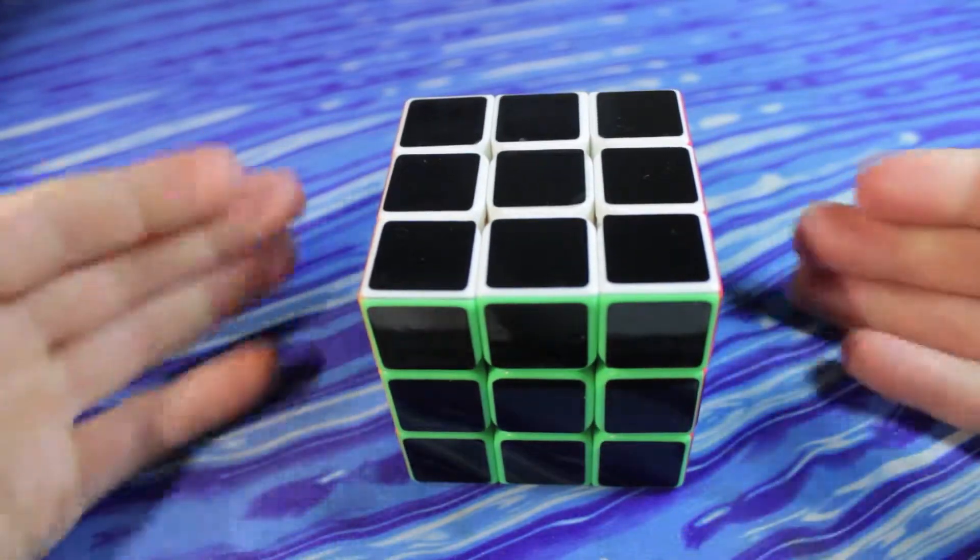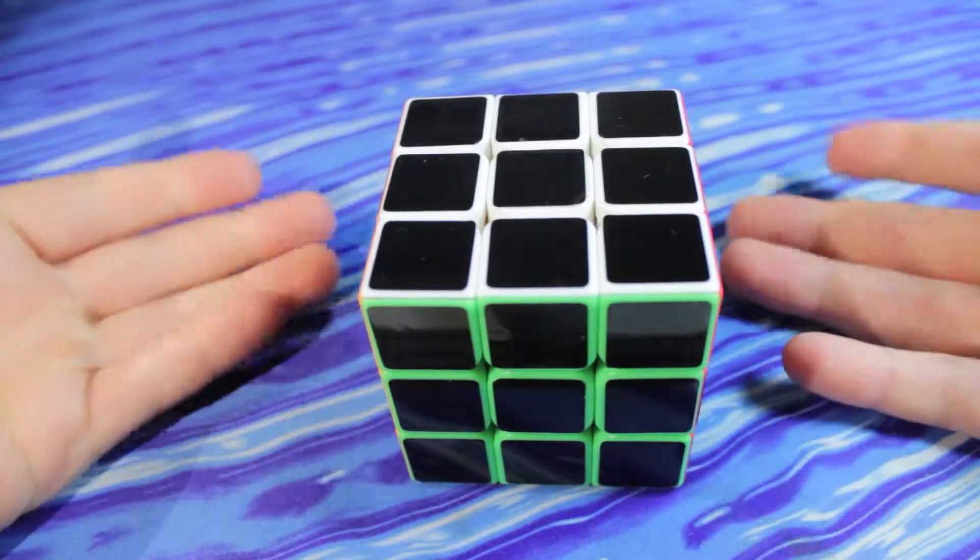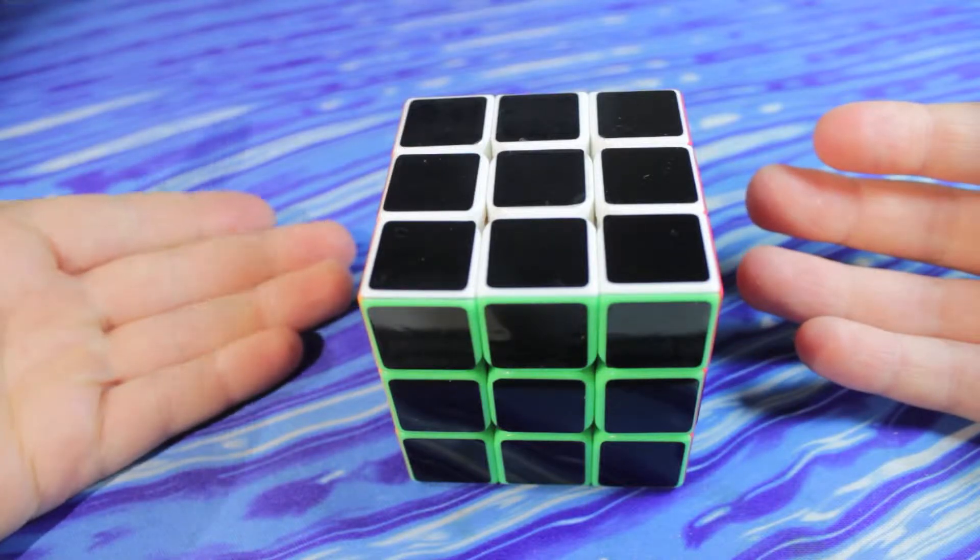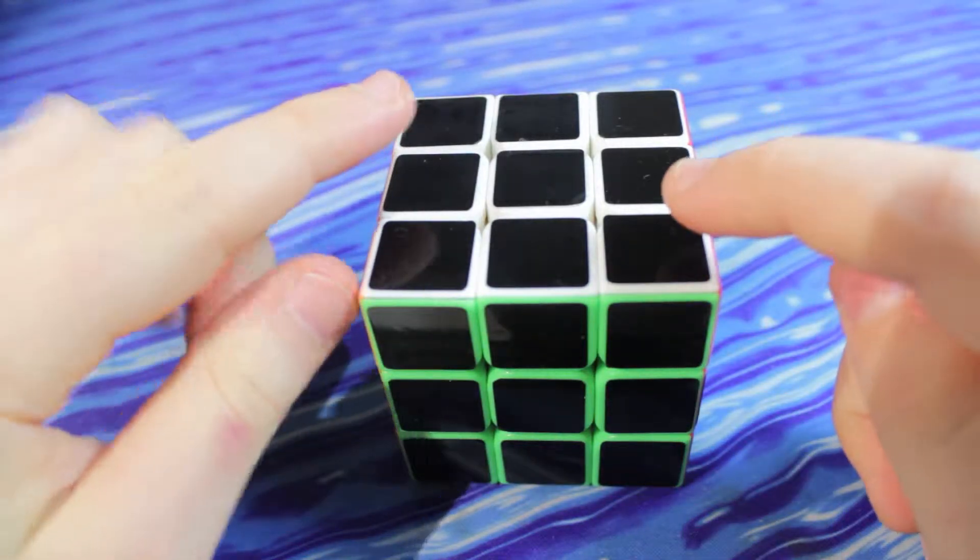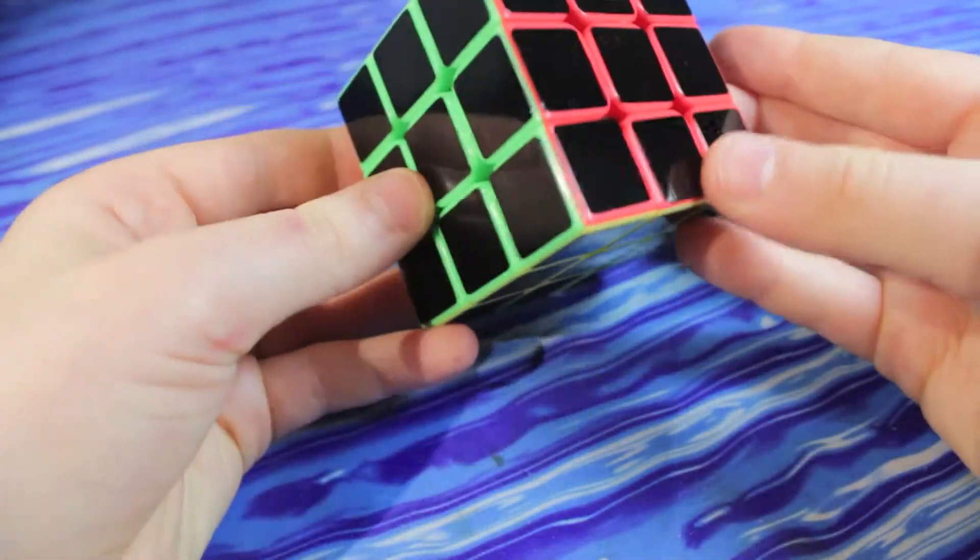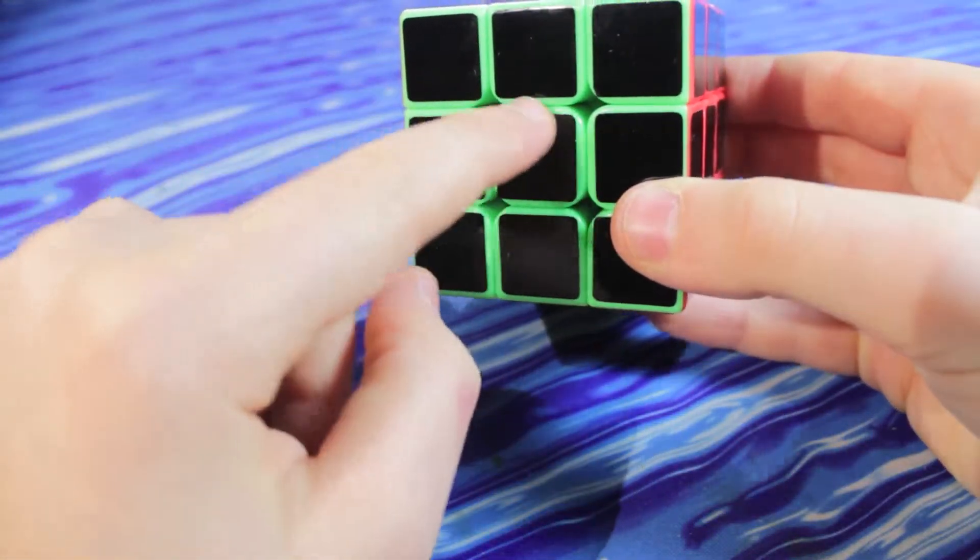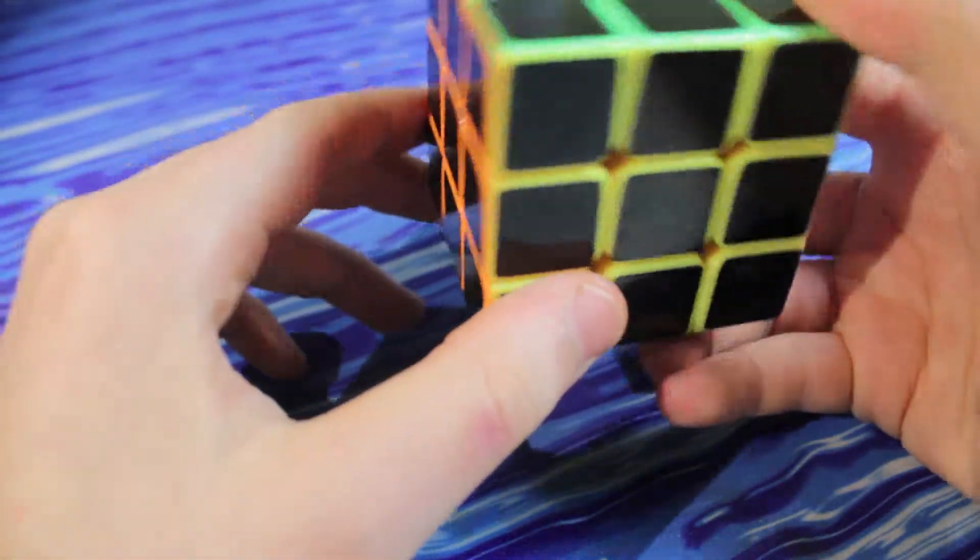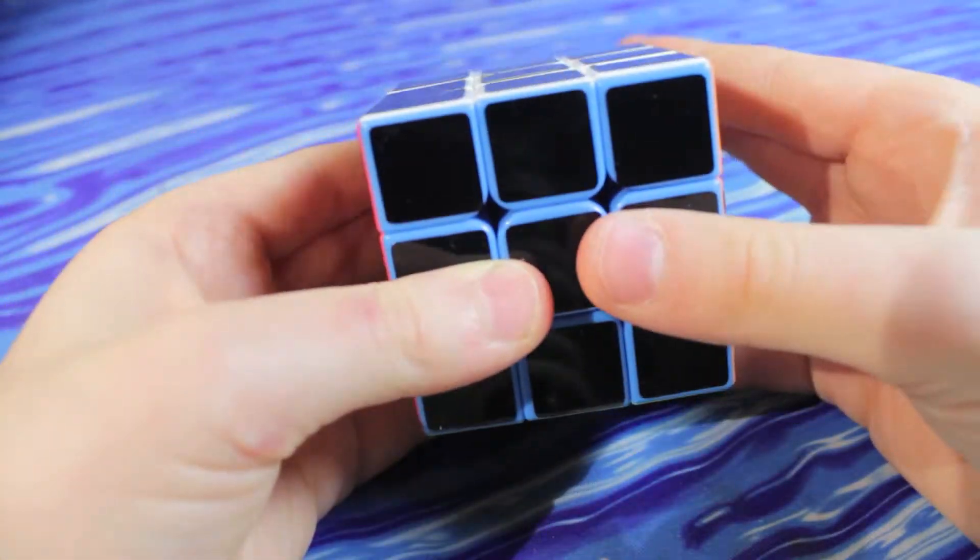If you guys already know what a phantom cube is, it's basically a Moyu CX-3 stickerless that has black stickers on it and it makes it look really cool. All you can see is really the outlines of the pieces and it just looks amazing.